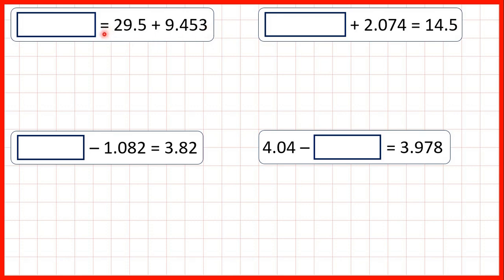We have something equals 29.5 plus 9.453. Now, all we've got on the left of the equal sign is an answer box, and it doesn't matter whether the equal sign is at the start, like it is here, or at the end, like it usually is. We do the same thing.